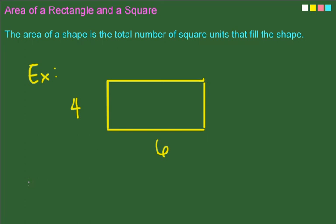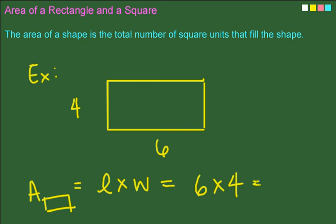Excellent. You just do area of the rectangle equals length times width, which gives you 6 times 4, which equals 24 square units. That was really easy, wasn't it?